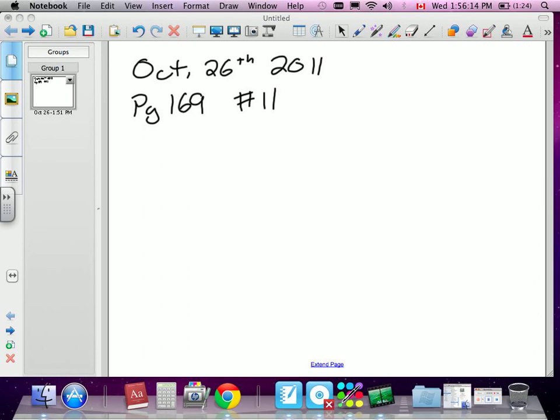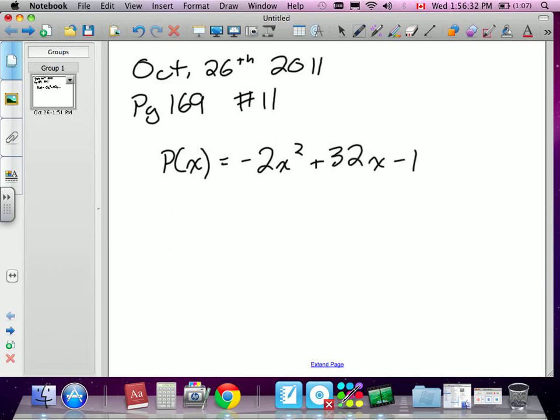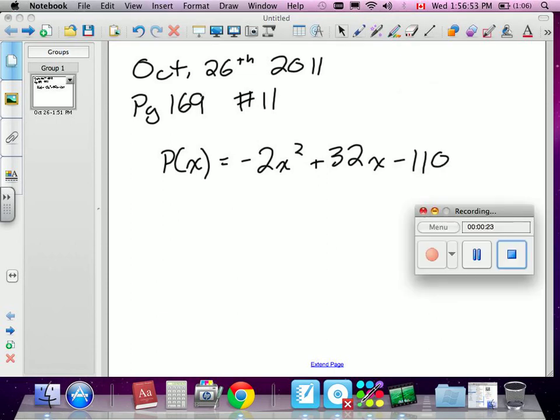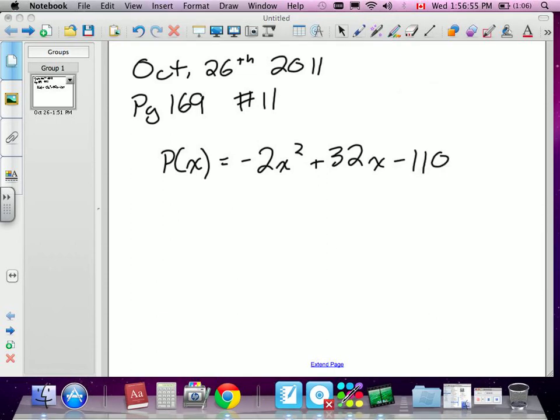Okay, this question says a computer software company models the profit on its latest video game with a function. P(x) is profit, equal to -2x² + 32x - 110, where x is the number of games the company produces in thousands.